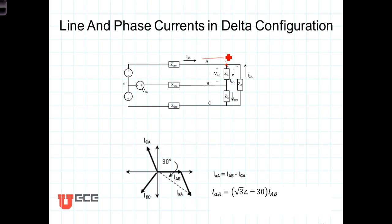You've got I sub little a big A here. You have I sub capital AB going here. That's meant to be the current going from the A node to the B node through the impedance here.